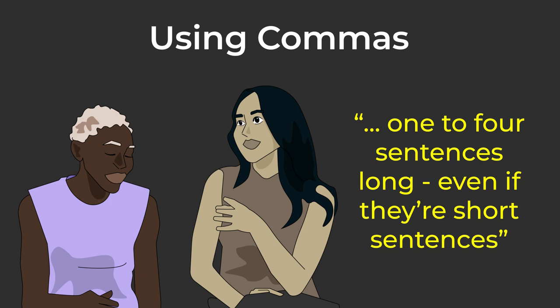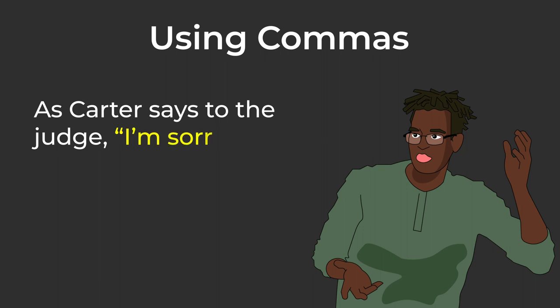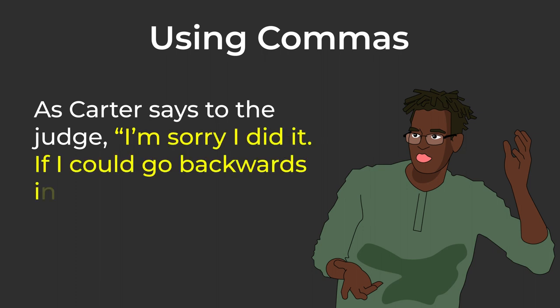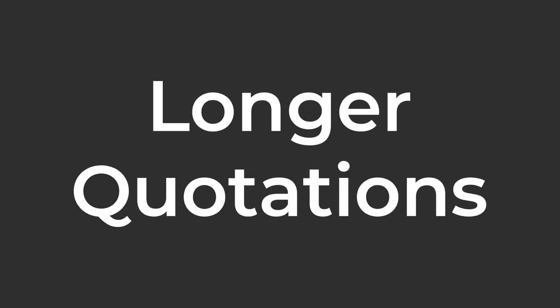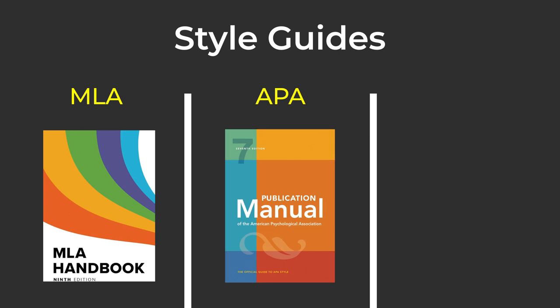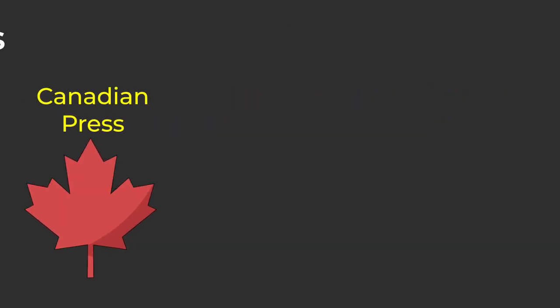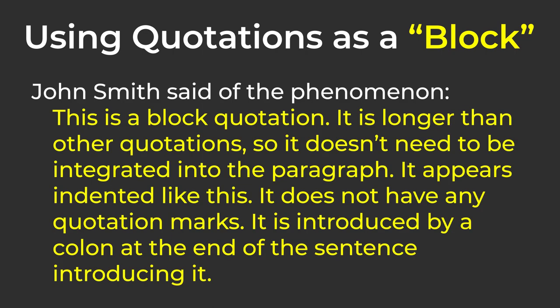For example, as Carter says to the judge, "I'm sorry I did it. If I could go backwards in time, I'd try to do things differently. That's the truth." For longer quotations, there are different methods depending on what you're writing, so follow the guidelines of the style guide you're using, such as MLA, APA, or the Canadian Press style guide. A popular way to include longer quotations is as a block: use a colon after the lead-in, then include the quote as its own indented paragraph without quotation marks.